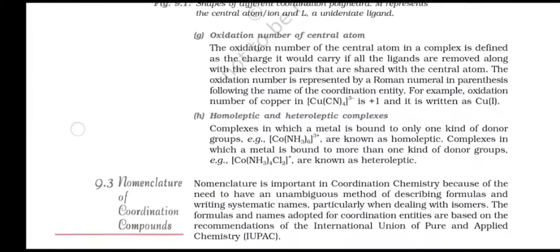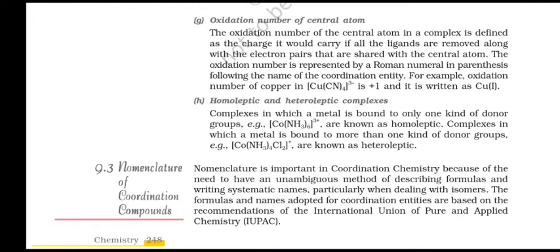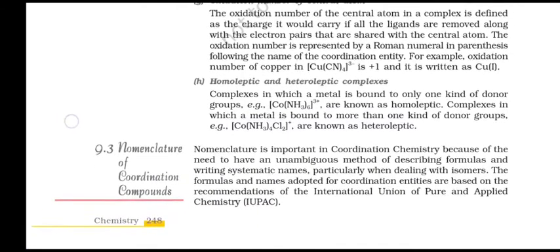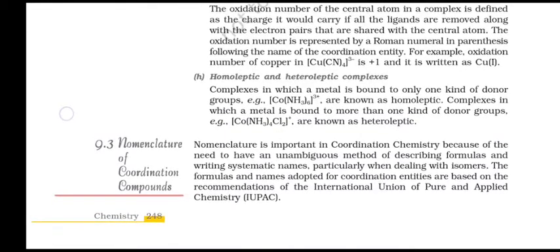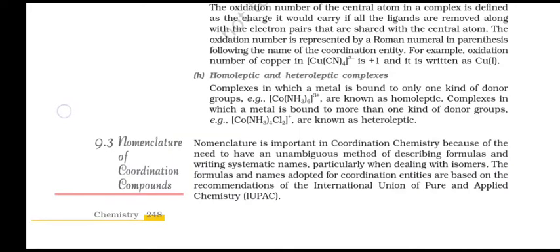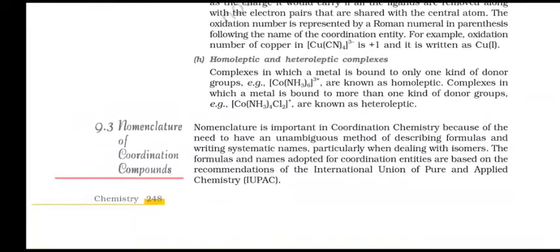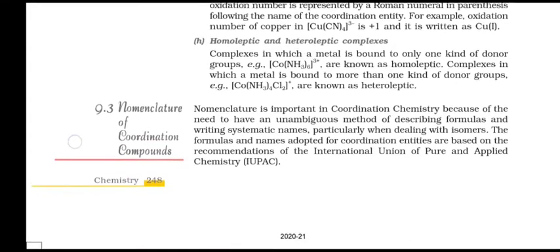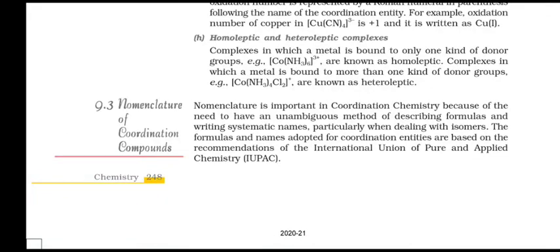Oxidation Number of Central Atom: The oxidation number of the central atom in a complex is defined as the charge it would carry if all ligands are removed along with the electron pairs that are shared with the central atom. The oxidation number is represented by a Roman numeral in parenthesis following the name of the coordination entity. For example, the oxidation number of copper in [Cu(CN)4]- is +1, written as copper(I). Homoleptic and Heteroleptic Complexes: Complexes in which a metal is bonded only to one kind of donor group, e.g. [Co(NH3)6]3+, are known as homoleptic. Complexes in which a metal is bound to more than one type of donor group, e.g. [Co(NH3)4Cl2]+, are known as heteroleptic.